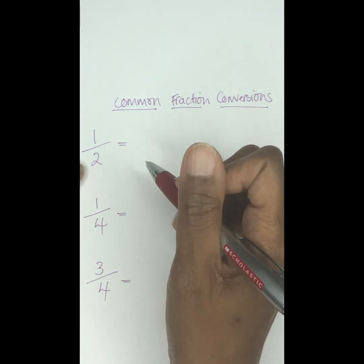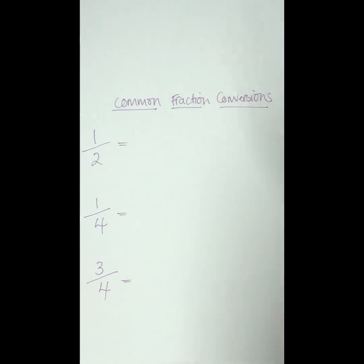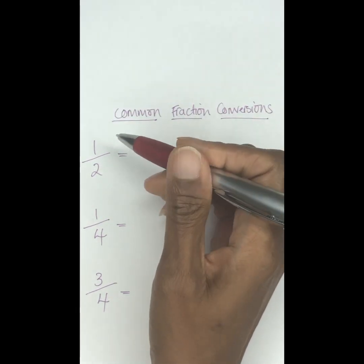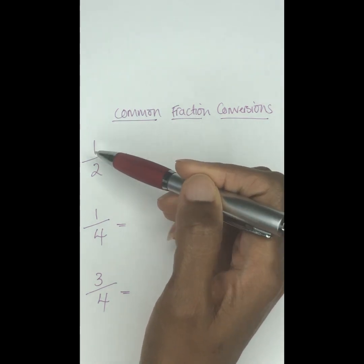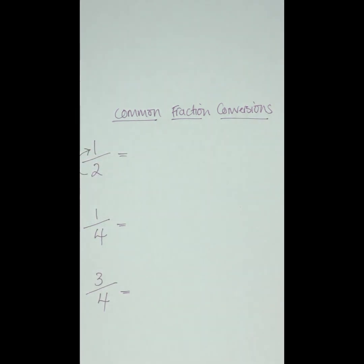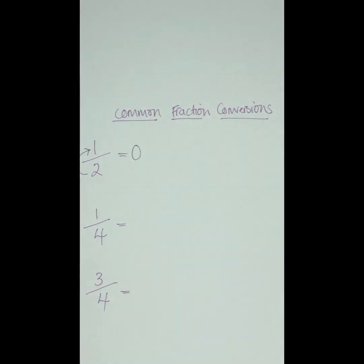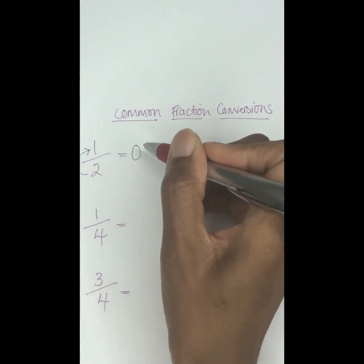Let me do the first one. So we have 1/2. What is 1/2 in decimal? Here we go. What you have to do first is divide the denominator into the numerator. So here we're going to put the 2 into the 1. Obviously it can't go in, right? So we put a zero here, then we put a decimal. Then because the 2 can't go into the 1, we put a zero up here which is going to make it a 10.